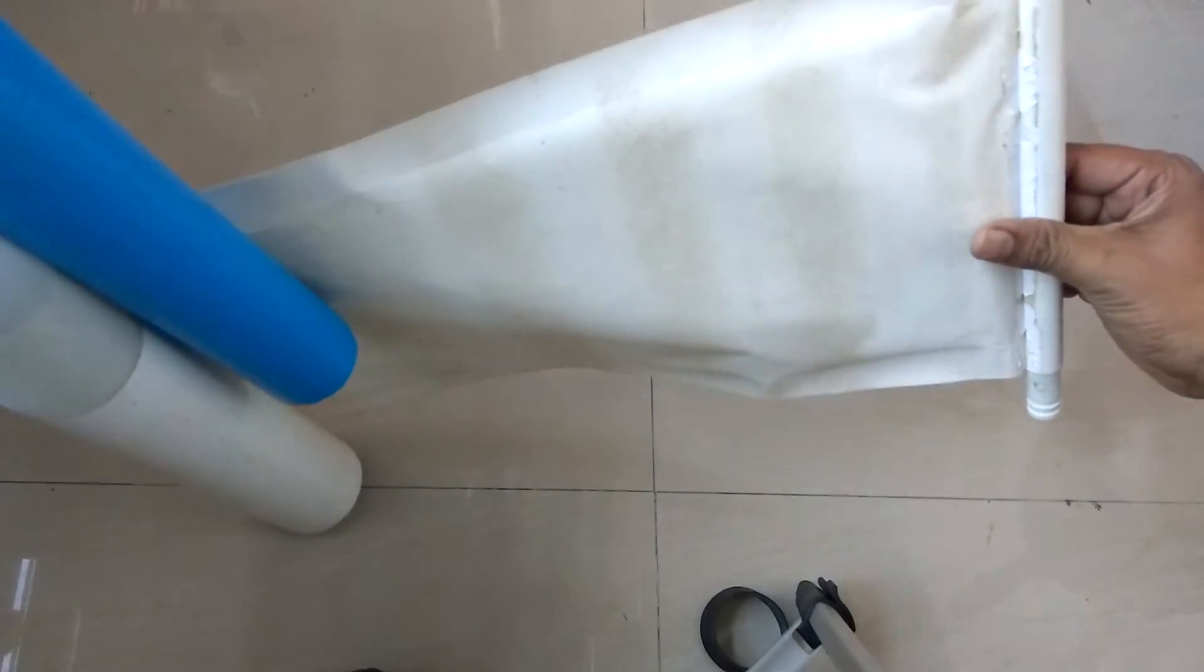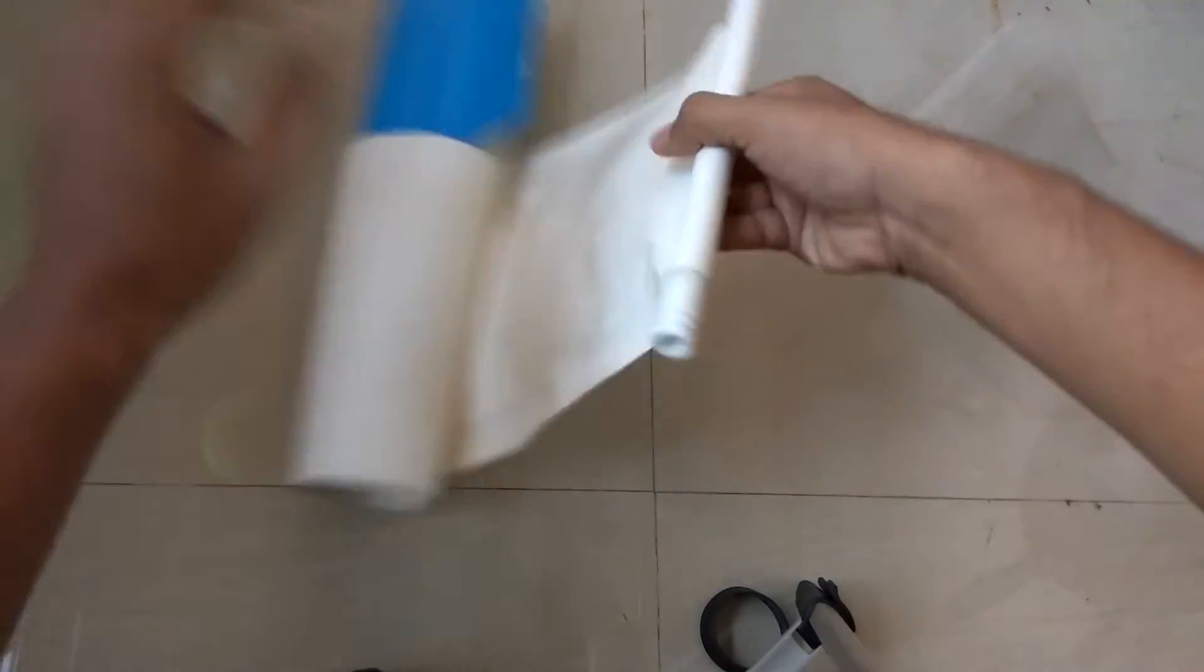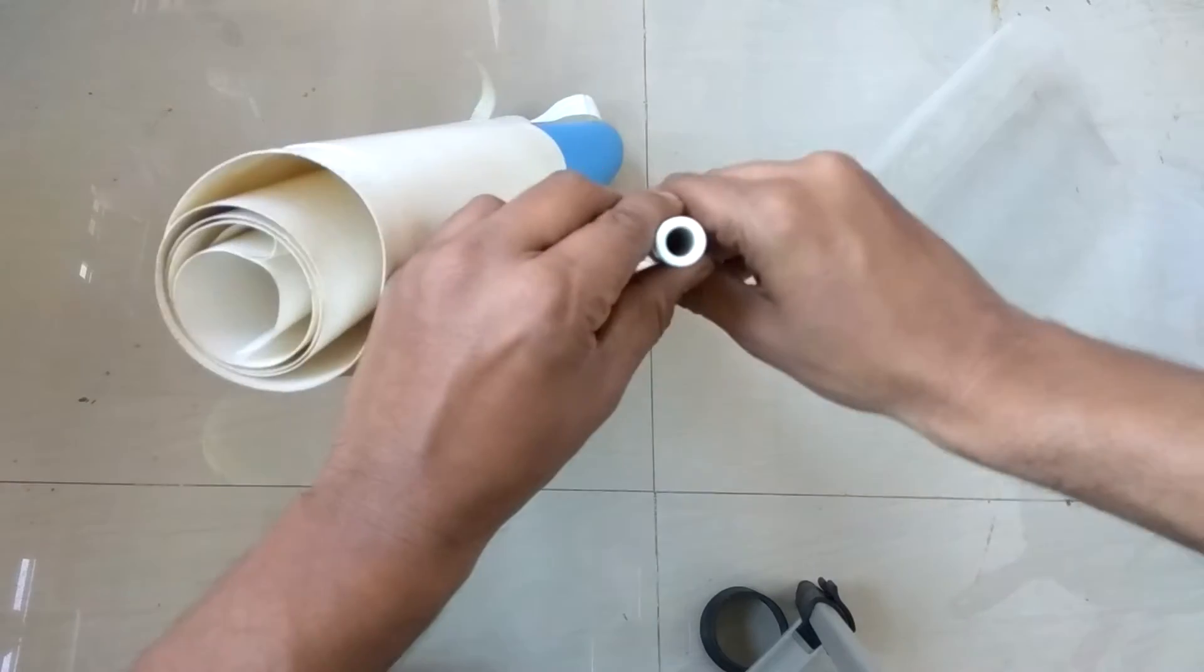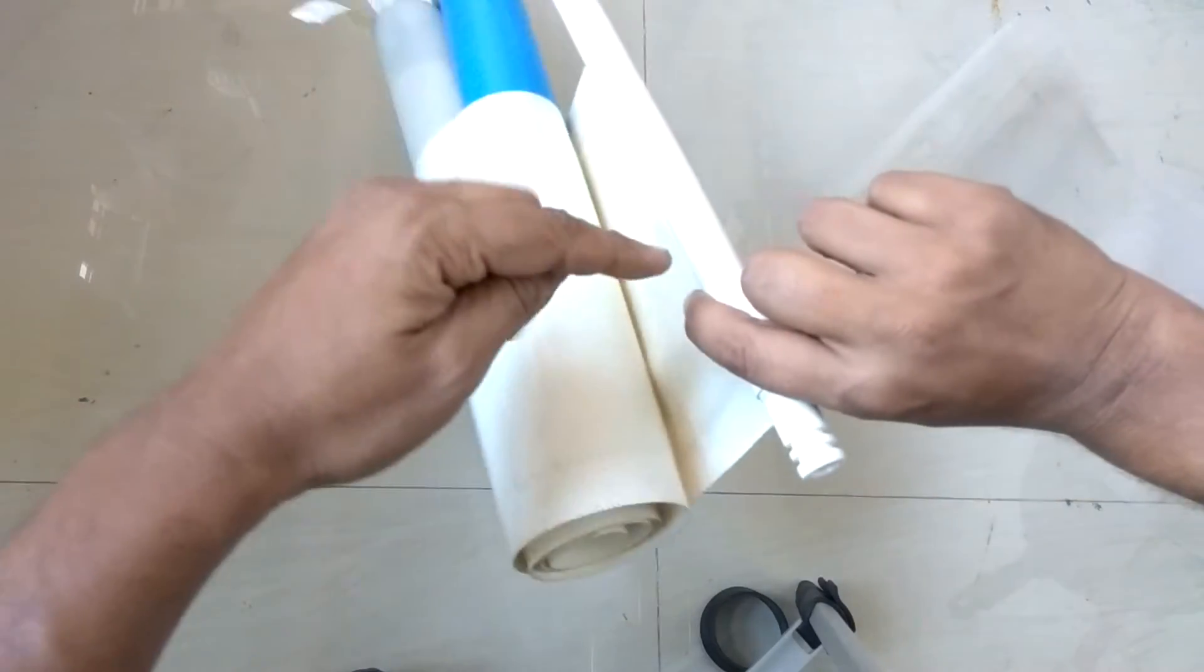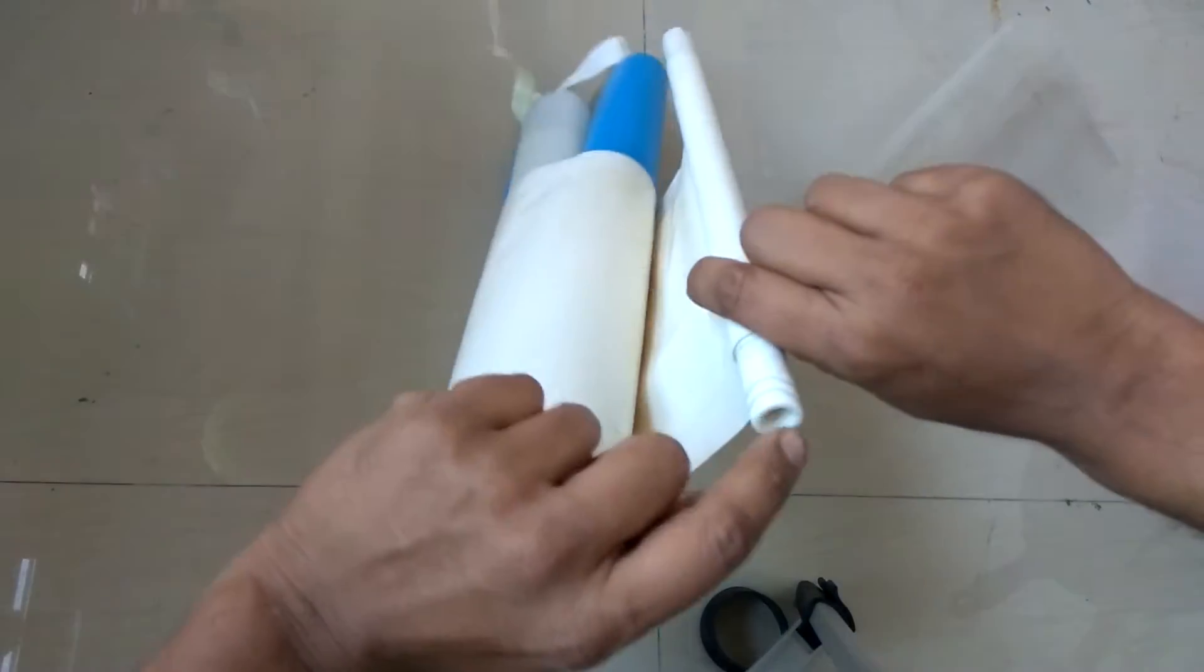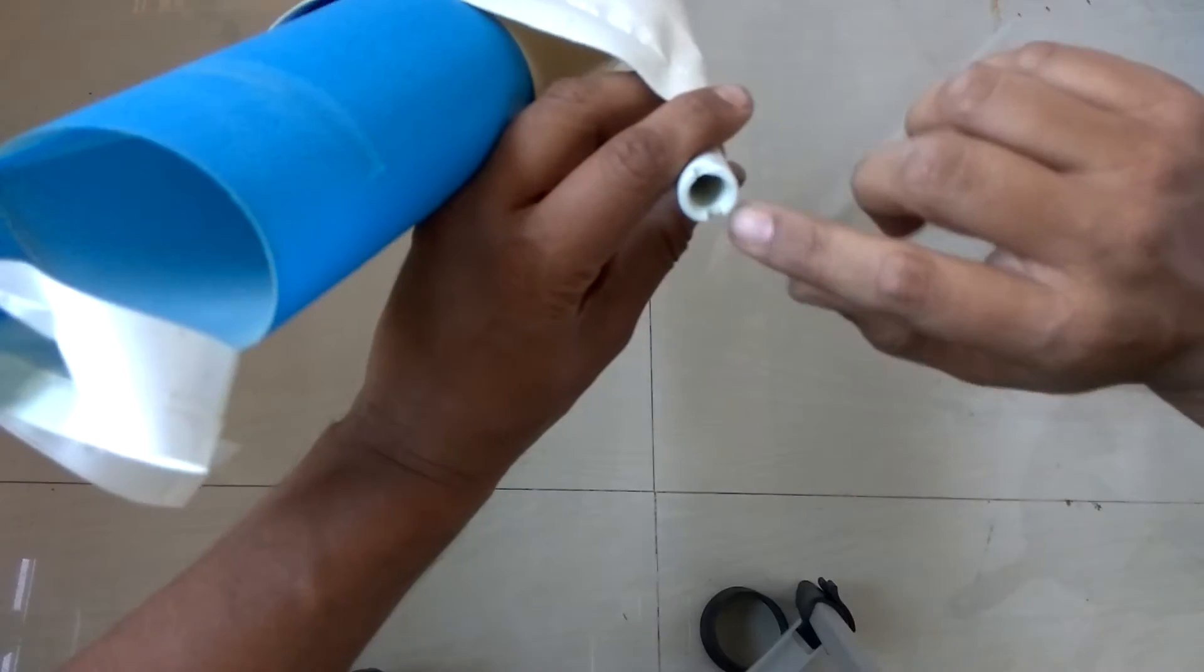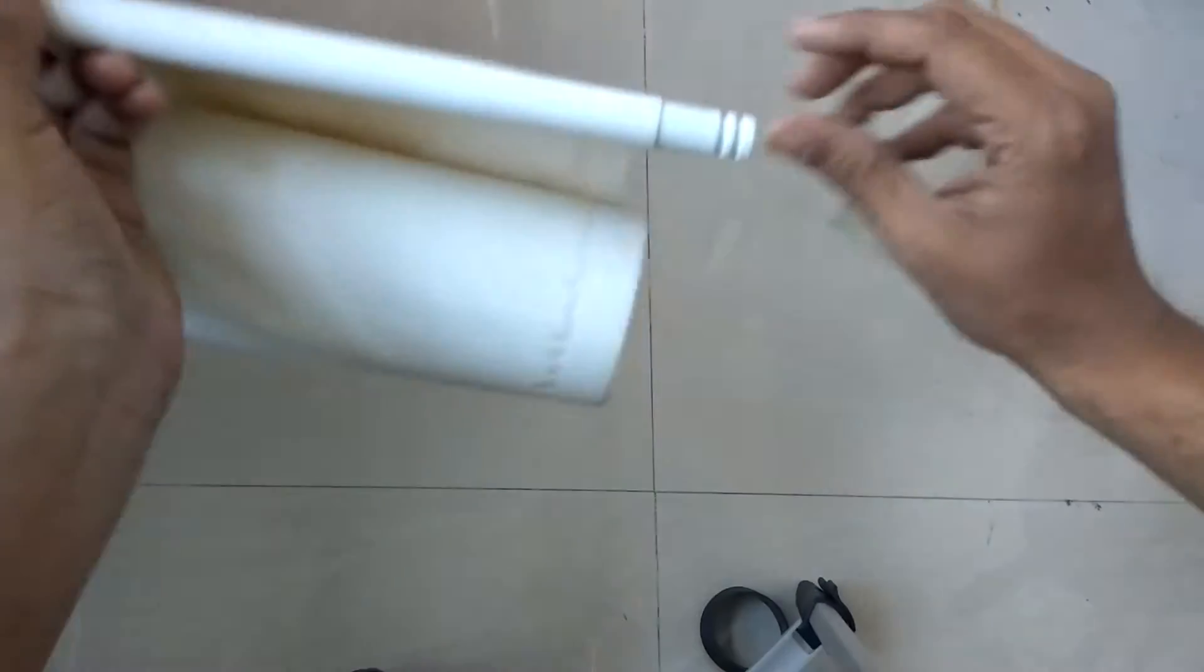As you can see, this pipe is there, but this pipe is only up to here. There is no entrance from this side; this is not a through pipe.